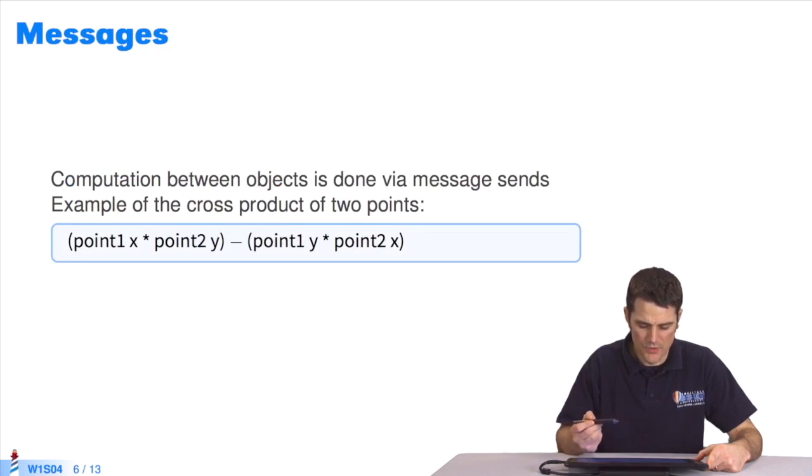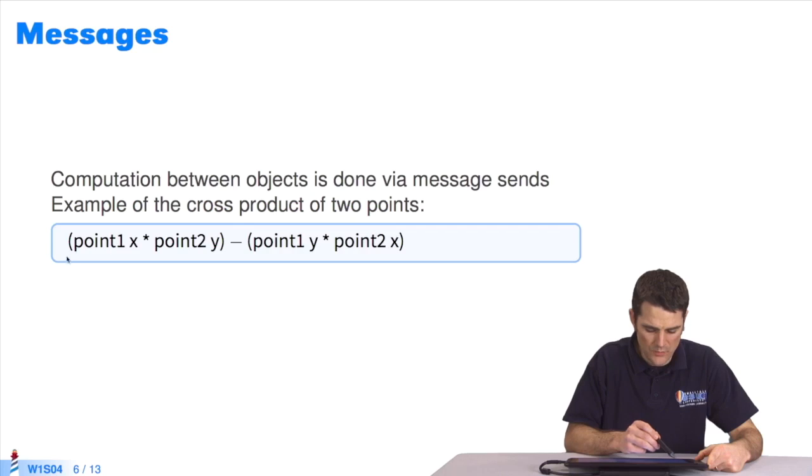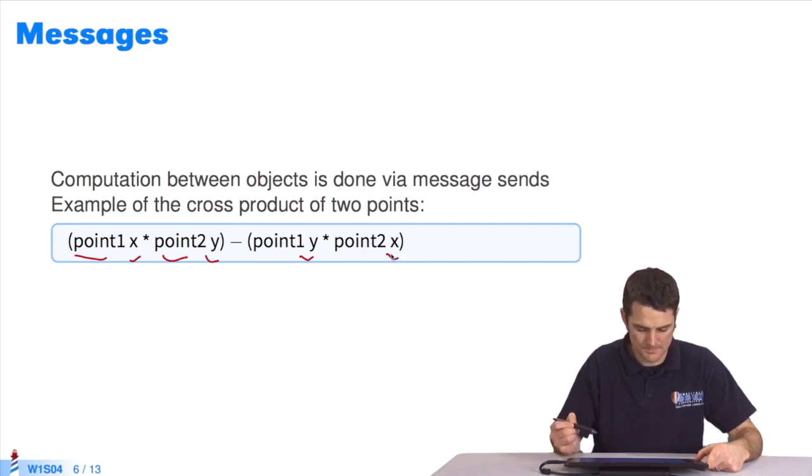Here's an example of code: the cross product of two points. There's point one and point two. I multiply the x field of point one by the y field of point two, and subtract the multiplication of the y field of point one and the x field of point two. It's an example of a computation you can do in Pharo.